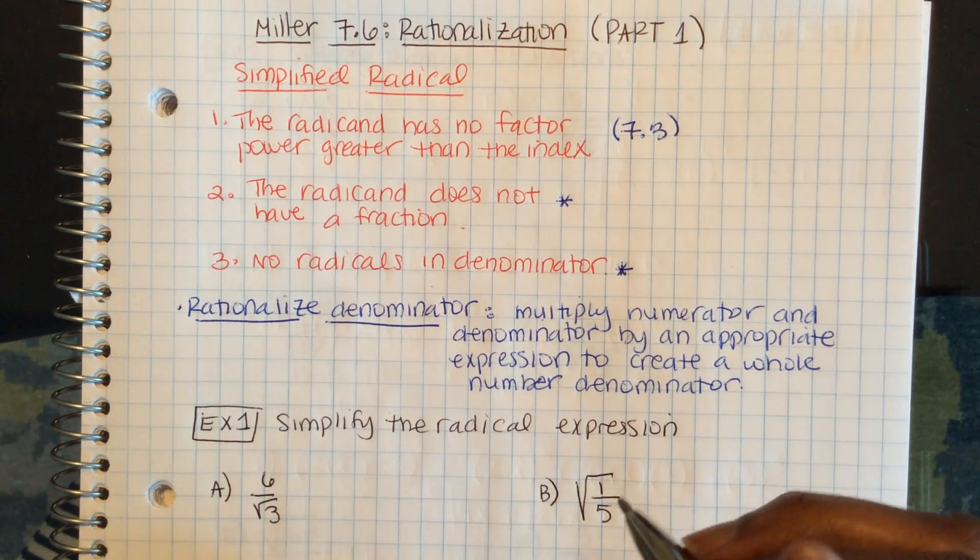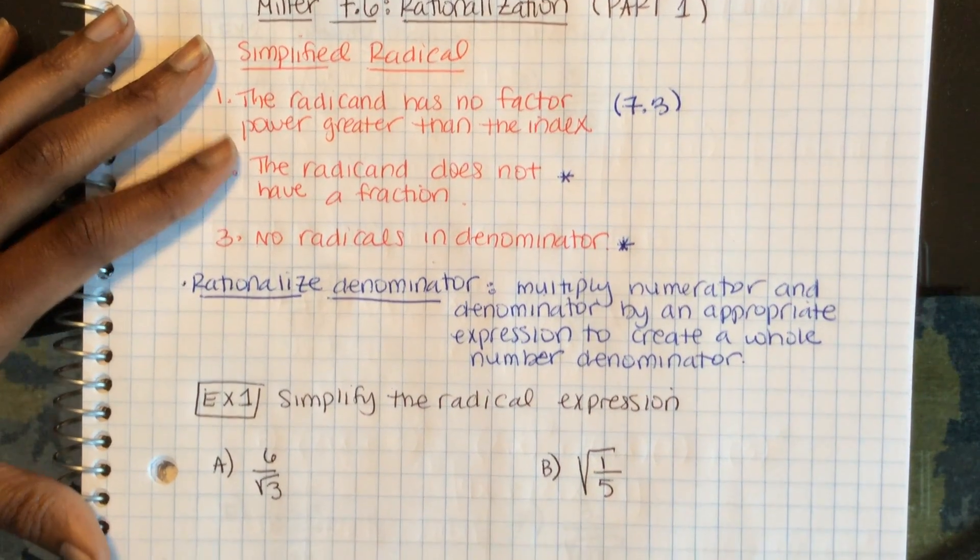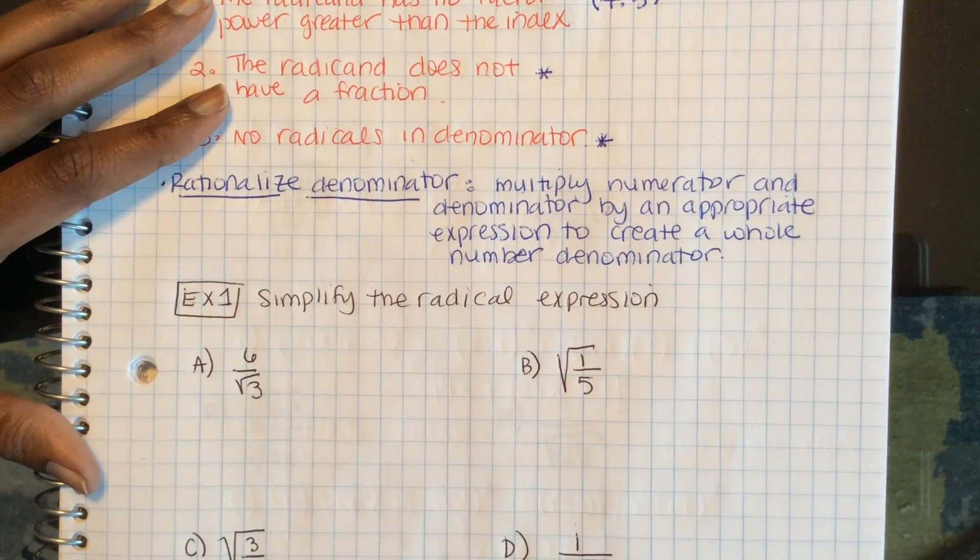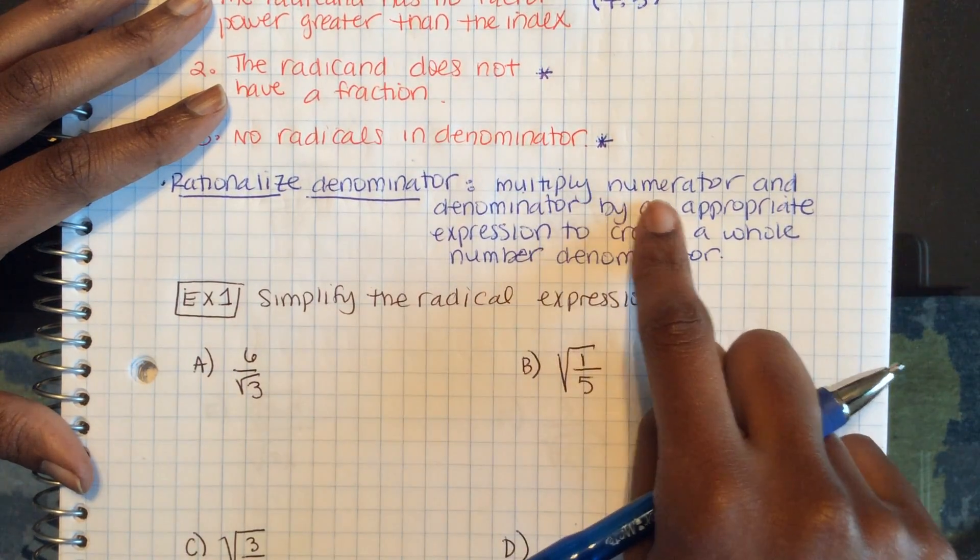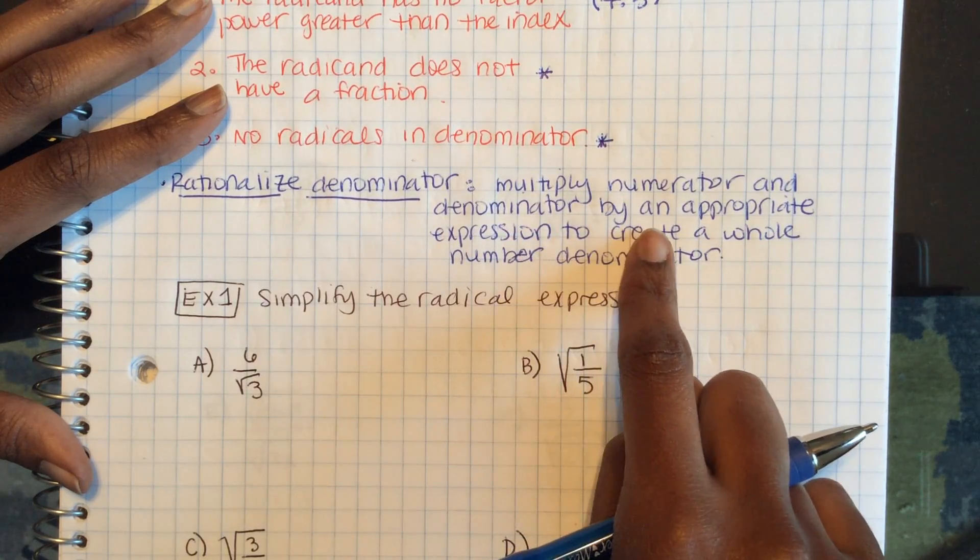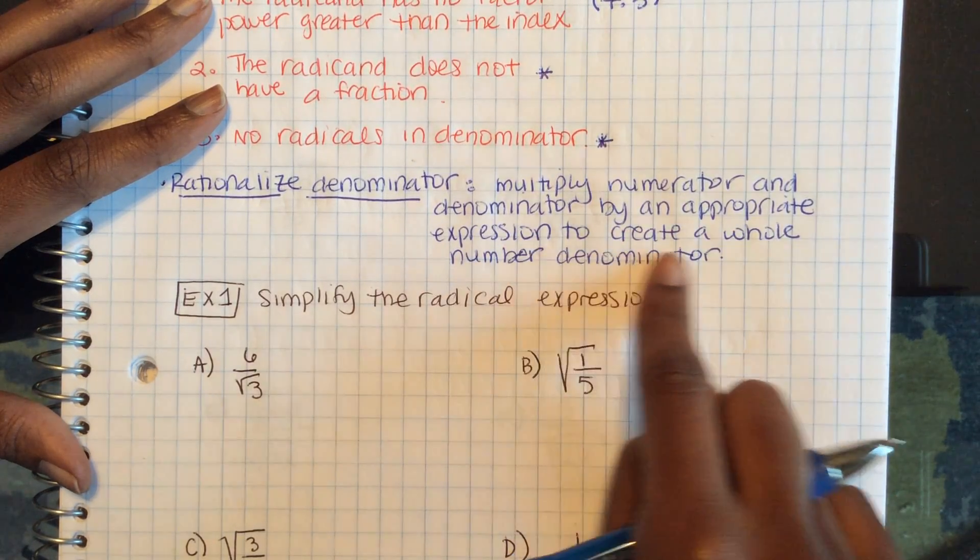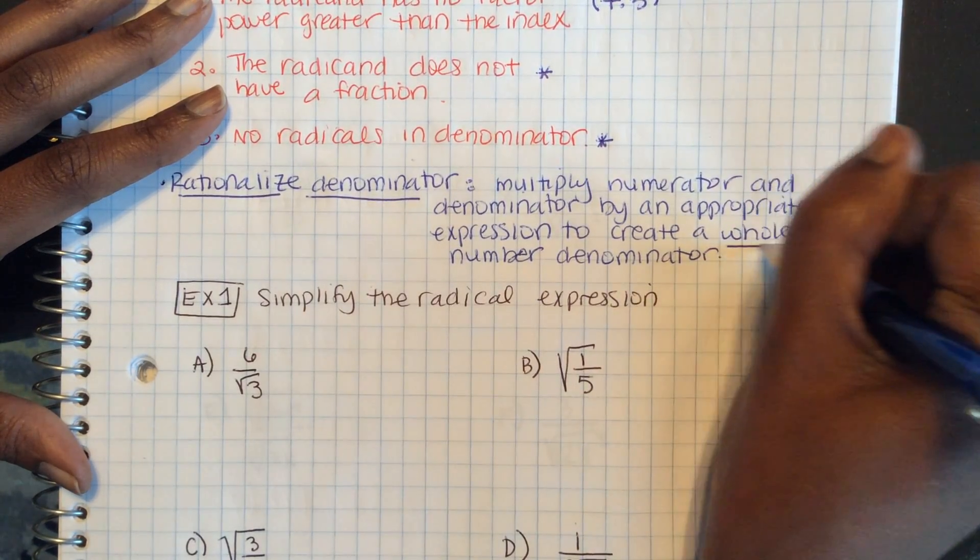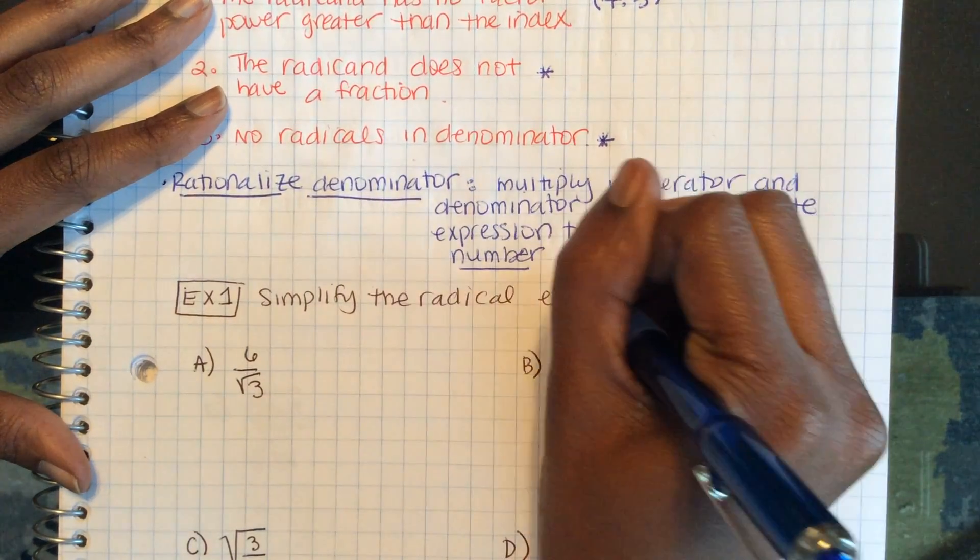So, if these two things happen, one of those two, we need to rationalize the denominator. When we're rationalizing the denominator, we're multiplying the numerator and the denominator by an appropriate expression to create a whole number denominator. That's our whole goal, a whole number denominator.